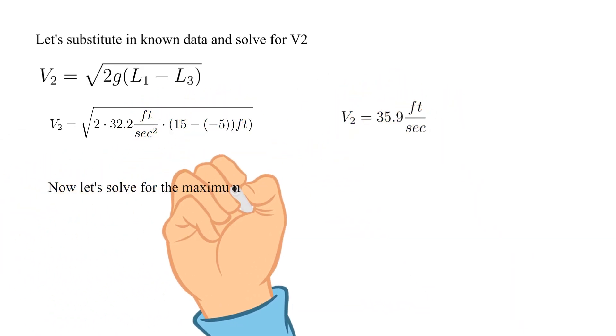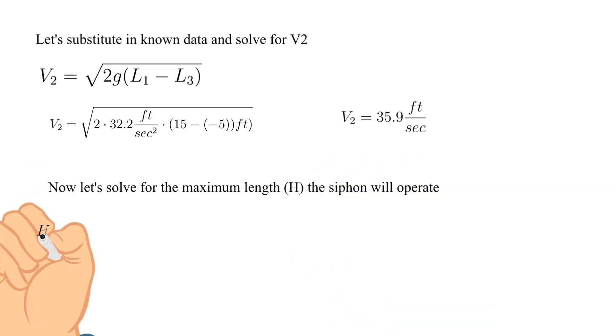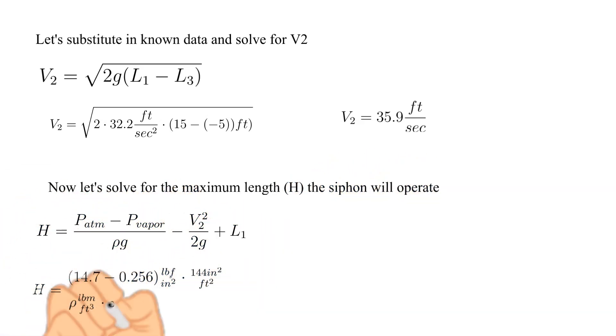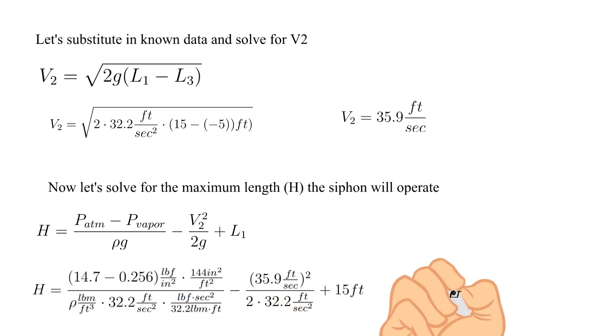Let's substitute in the data and solve for V2. Doing so we get 35.9 feet per second, which has the correct units. Now we'll substitute in this value for V2 and solve for H as shown below. After we are done we get H is equal to 28.3 feet.